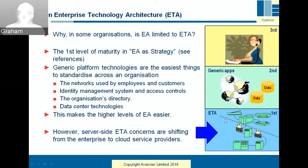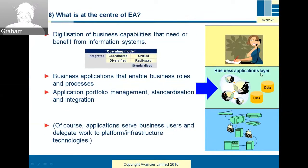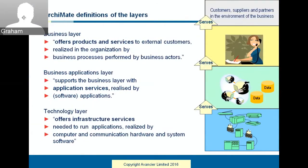Interestingly, control of the server side is shifting gradually to cloud service providers. That's a trend at the moment. So does that mean enterprise architecture is disappearing? Not at all, because its focus is really about digitizing roles and processes that create new data using business applications. Applications help people do the business, and they depend upon technology, so you can't separate them. But the center of EA is that business applications layer. These three Archimate-defined layers form a client-service stack from the top down: customers are served by the business, the business is served by applications and data, and they are served by the infrastructure technologies.